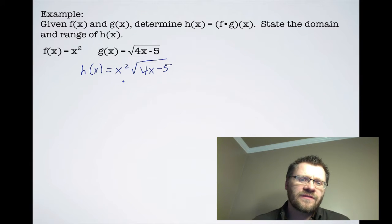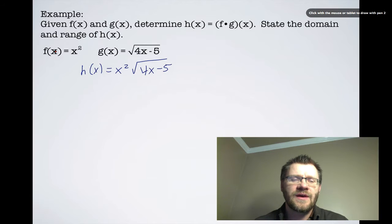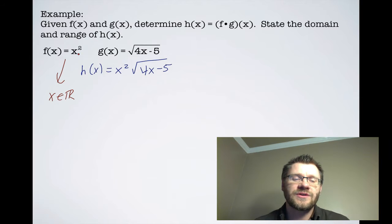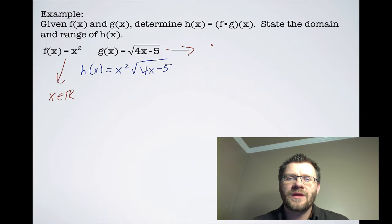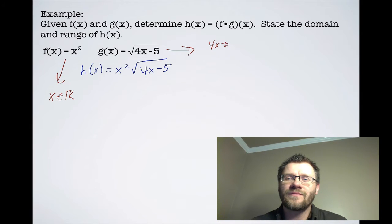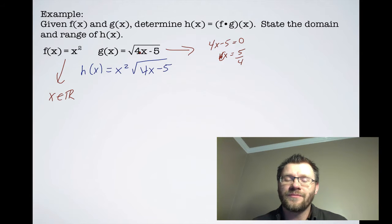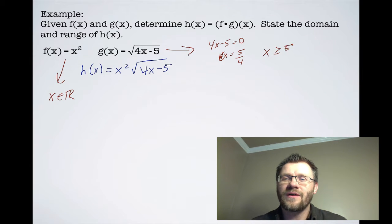The domain of h(x) is whatever is common between the two functions. For f(x) = x², the domain is all real numbers since it's a quadratic. For g(x) = √(4x − 5), we need 4x − 5 ≥ 0, so 4x − 5 = 0 gives x = 5/4. Therefore the domain of g(x) is x ≥ 5/4.